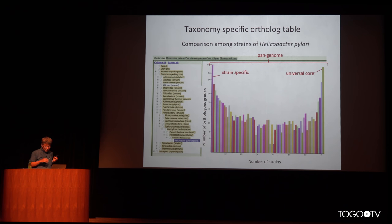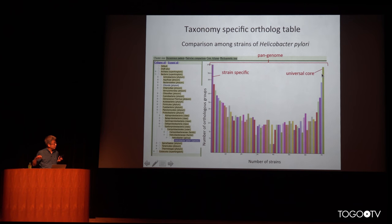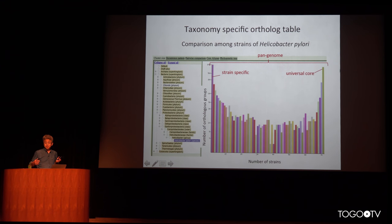Typically for this kind of analysis, one can see a histogram showing the number of strains included in each ortholog group. Here is the ortholog group conserved in all strains, usually called the core genome, and here is the other side, corresponding to strain-specific genes. The entire set of ortholog groups corresponds to the entire repertoire of the species, usually called the pan genome.